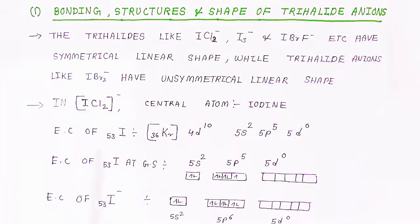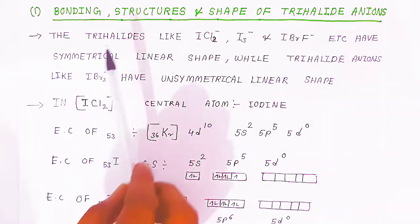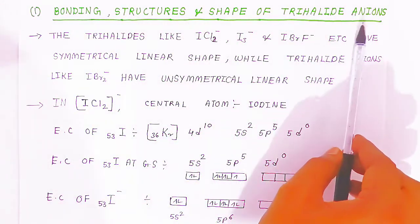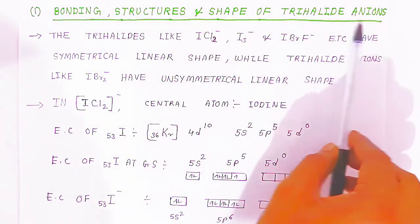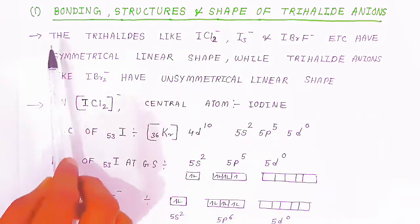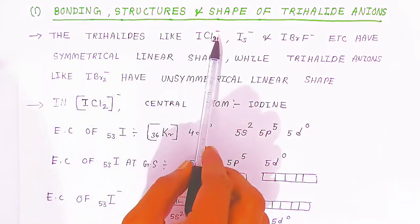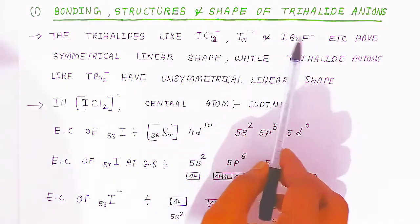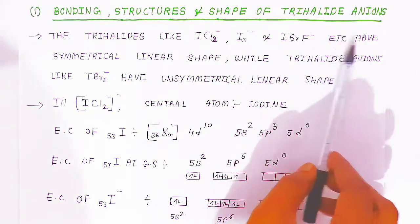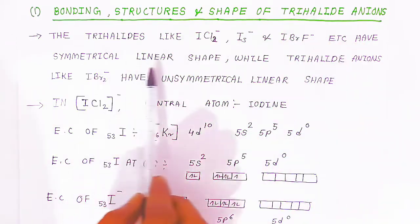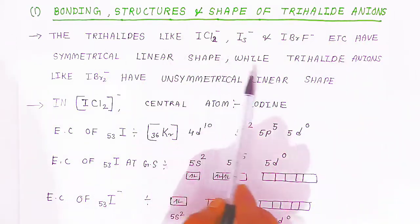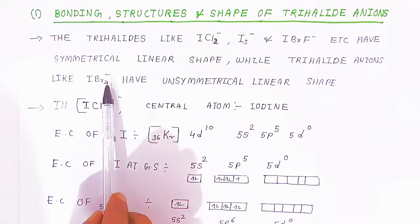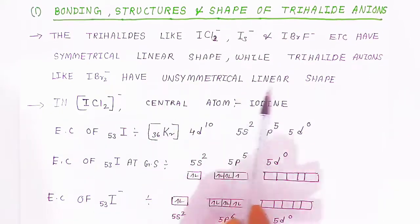Now we are going to see the bonding structure and shape of the trihalide anions. The trihalide ions like ICl₂⁻, I₃⁻, IBr₂⁻, IF₂⁻ etc. have the symmetrical linear shape, while trihalide anions like IBr₂⁻ have an unsymmetrical linear shape.